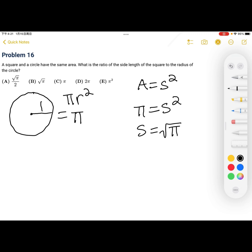And then lastly, we're asked to find the ratio of the side length of the square to the radius of the circle, which is the square root of pi over 1. Simplifying, we get that this is just the square root of pi, which is B.